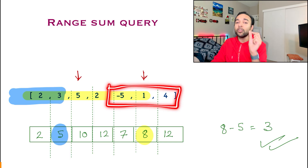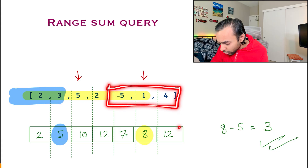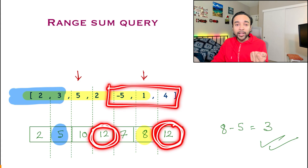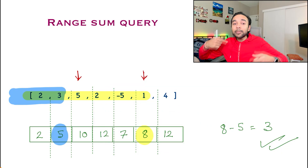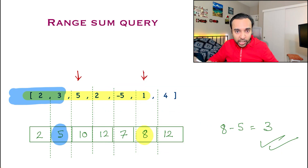Now can you use this prefix array to answer all queries very fast? Yes. For example, the sum of a particular range will simply be 12 minus 12, which is 0, and you can verify: 4 plus 1 minus 5. So this prefix array is helping you find all of these sums very quickly, and this solution works wonderfully. Take a moment and let this concept sink in, because this is just the one-dimensional version. What we are going to do is extend this problem to two dimensions and work upon it.